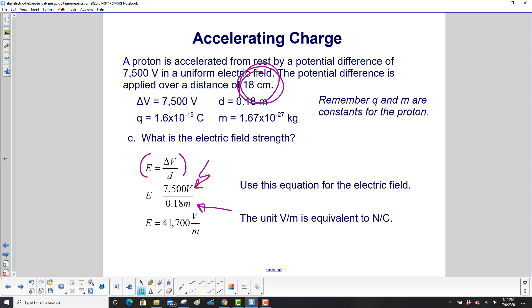And we'll get 41,700 volts per meter. And also, we just found out that the unit for electric field, we initially introduced it as newtons per coulomb, right? Because E was equal to force over charge, so that's newtons over coulomb. It's also equal to volts per meter.